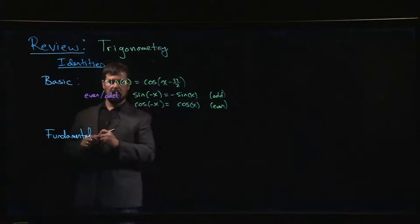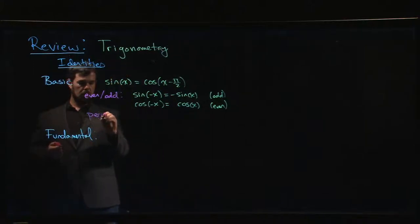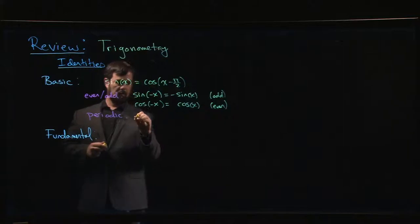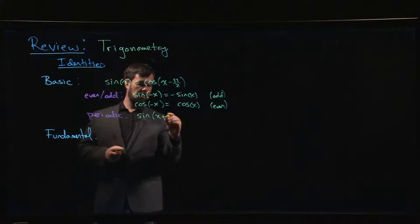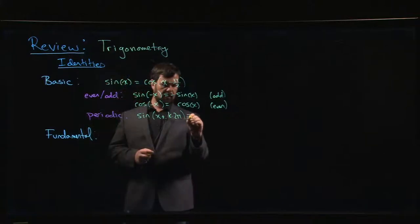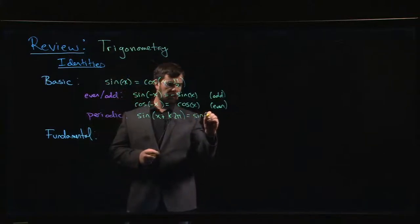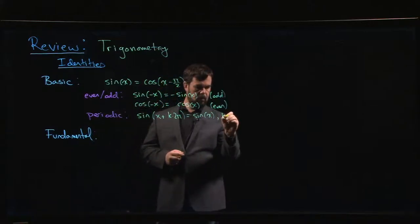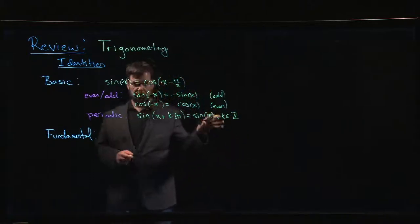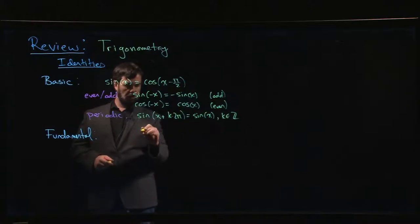And then we also have these identities coming from the fact that the trig functions are all periodic. So sine of x plus any multiple of 2 pi is the same thing as sine of x for k. k could be any integer. So 0, 1, 2, 3, minus 1, minus 2, minus 3. And the same thing for cosine.